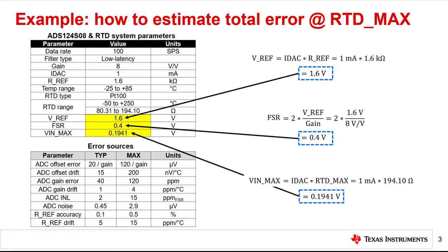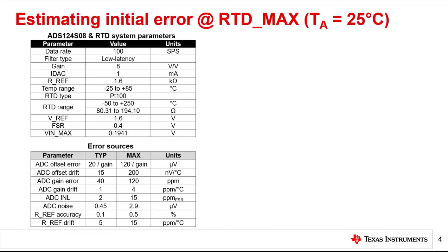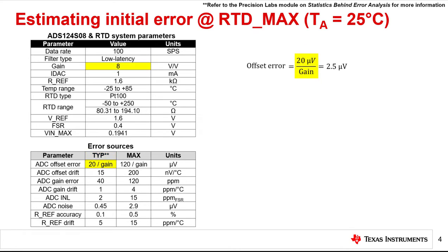Now we can begin estimating the total initial error. To estimate the initial error, let's calculate each error source individually and convert to microvolts. Where applicable, relative errors will be referenced to the maximum input voltage, VNmax. The initial error is specified at an ambient temperature of 25 degrees Celsius. We will use typical errors because these represent the most statistically likely set of conditions. Typical offset error is specified in microvolts and is given by the equation 20 divided by gain, or 2.5 microvolts for this example.